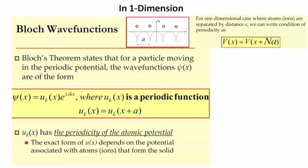Now, in a one-dimensional system or crystal where atoms or ions are separated by a distance A, we can write the condition of periodicity as V(x) = V(x + nA). Bloch's theorem states that for a particle moving in a periodic potential, the wave functions ψ(x) are of the form ψ(x) = Uₖ(x)·e^(±ikx), where Uₖ(x) is a periodic function having the periodicity of the atomic potential. The exact form of Uₖ(x) depends on the potential associated with the atoms or ions that form the solid.